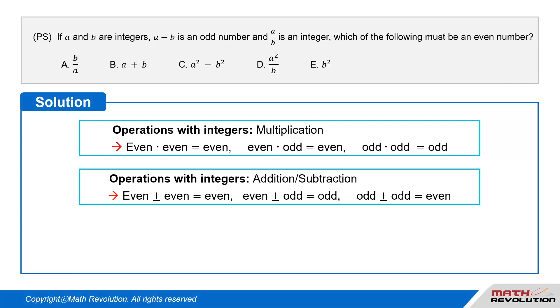Addition or subtraction of two even integers or two odd integers gives an even integer, while addition or subtraction of an even integer and an odd integer gives an odd integer.